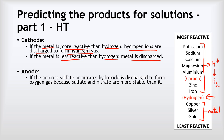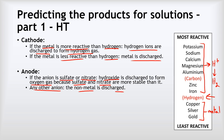And then at the anode, we have a similar kind of situation going on but it's not quite so clear-cut. What we find is that if our anions are sulfate or nitrate, then hydroxide gets discharged to form oxygen gas, and the reason why is because sulfate and nitrate are more stable than hydroxide, so hydroxide can be more easily discharged than they can. However, for any other anion, we'll get the non-metal being formed instead.